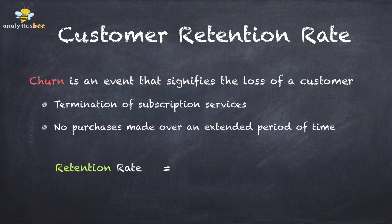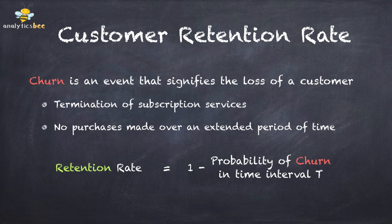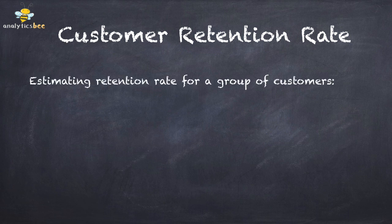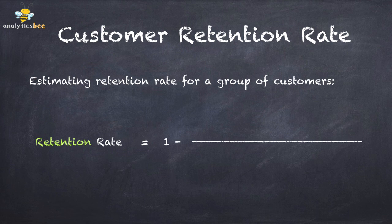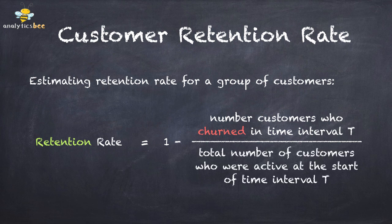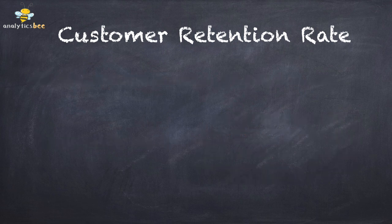Retention rate can be defined as 1 minus the probability of churn in the given time interval. Here is how we can estimate the retention rate for a group of customers: it's simply 1 minus the ratio between the number of customers who churned in time interval t and the total number of customers who were active at the start of the time interval.